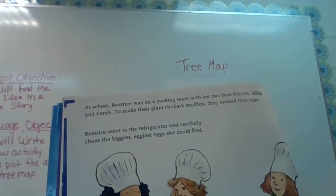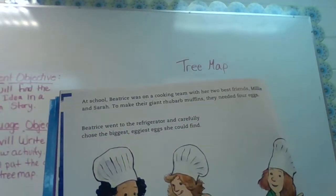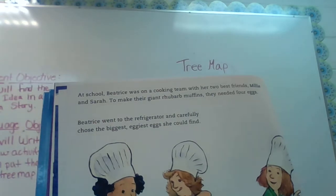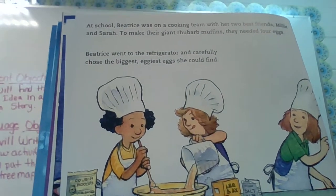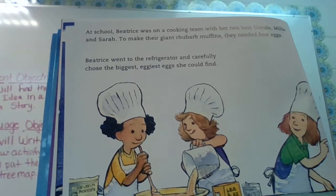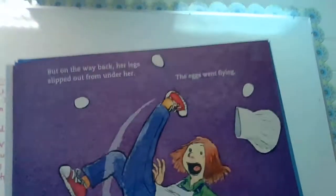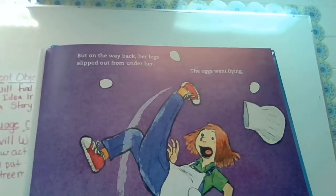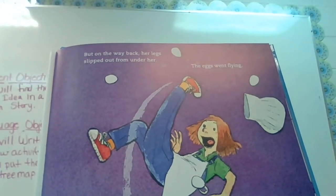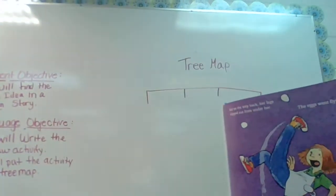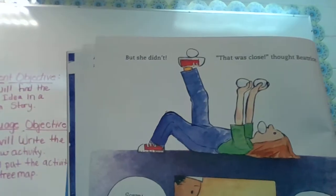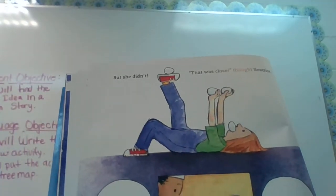At school, Beatrice was on a cooking team with two of her best friends, Millie and Sarah. To make their giant rhubarb muffins, they needed four eggs. Beatrice went to the refrigerator and carefully chose the biggest egg she could find. But on the way back, her legs slipped out from under her. The eggs went flying. Beatrice was about to make her first mistake. But she didn't. That was close, thought Beatrice.